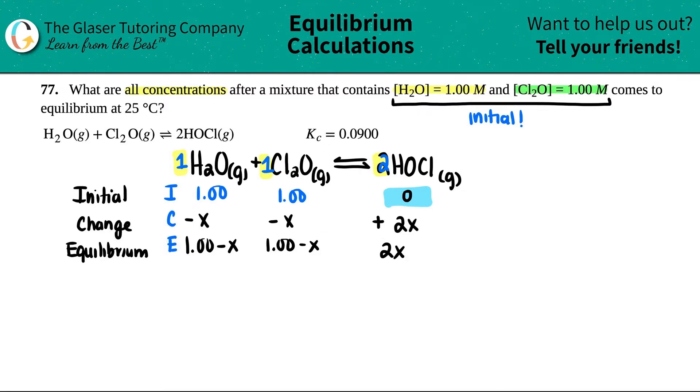The Kc expression is that general formula: Kc equals concentration of products divided by reactants raised to the coefficients, and only aqueous and gases are allowed. Double-check your states, but we're all good - we're all gases.